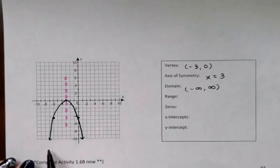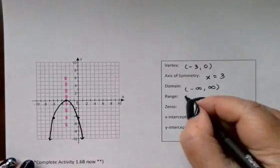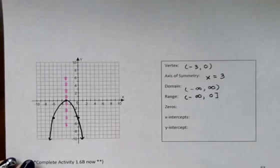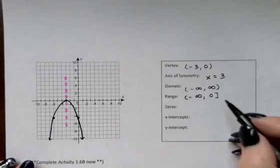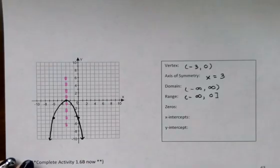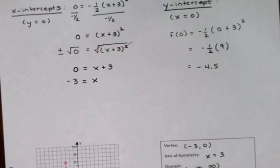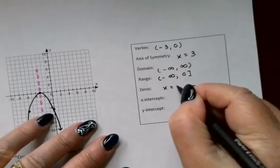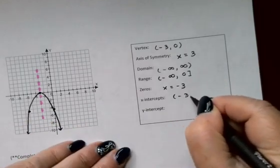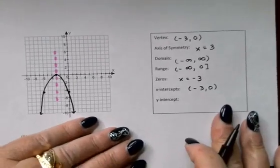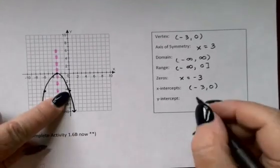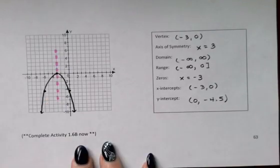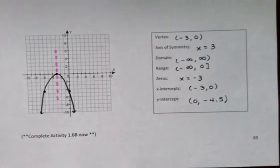The domain always for quadratic functions is all real numbers from -∞ to ∞. The range: the smallest y values actually go all the way down to -∞, but the largest y value is 0. It does include the 0, therefore I put a bracket. The zeros of the function, there is only one. That was this x = -3 right here. And if I write that as the point (-3, 0), it becomes my x-intercept. The y-intercept was at (0, -4.5). All right. So that concludes part B of section 1.6.